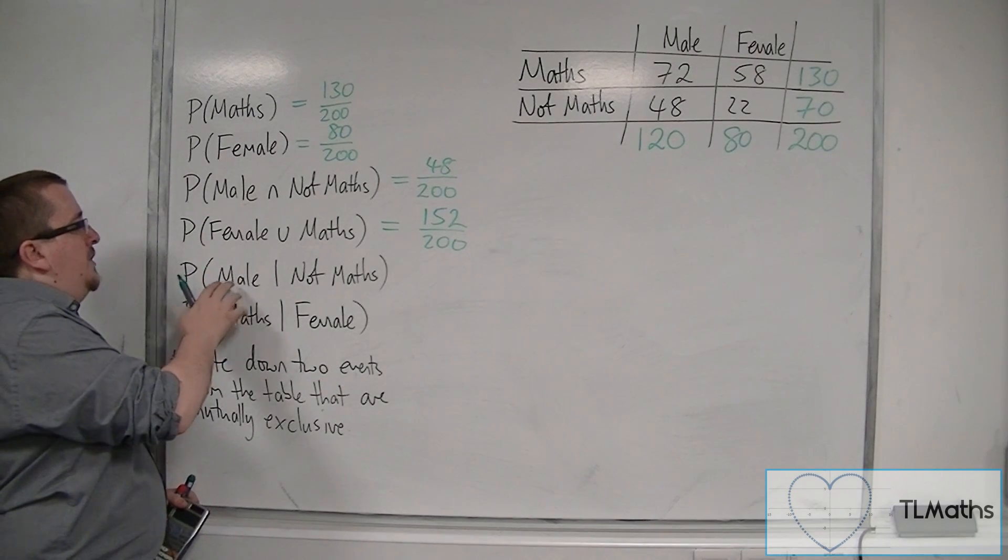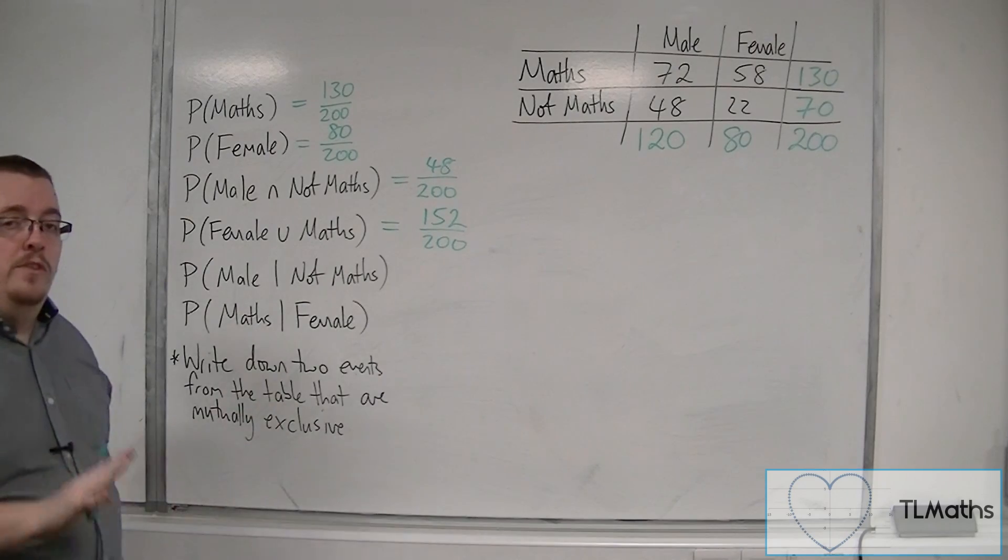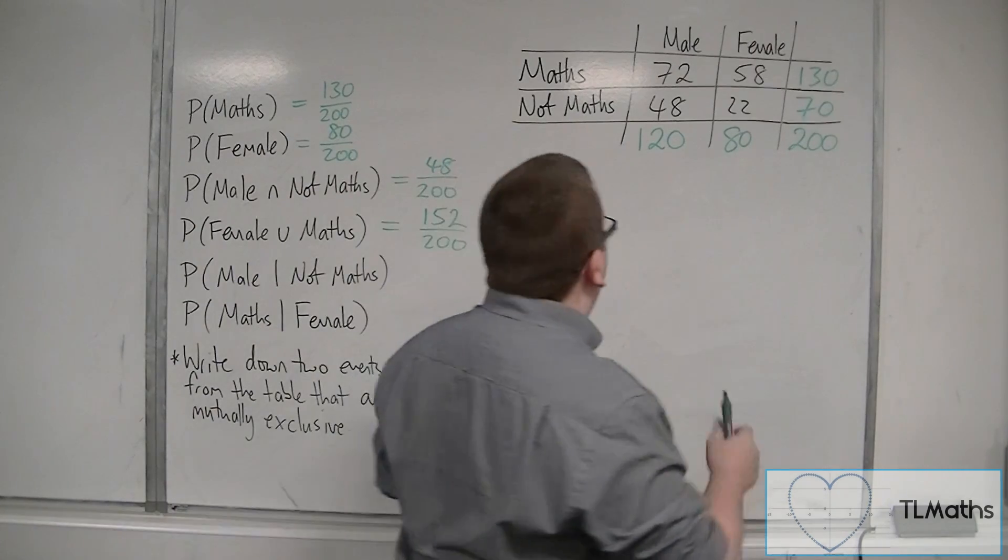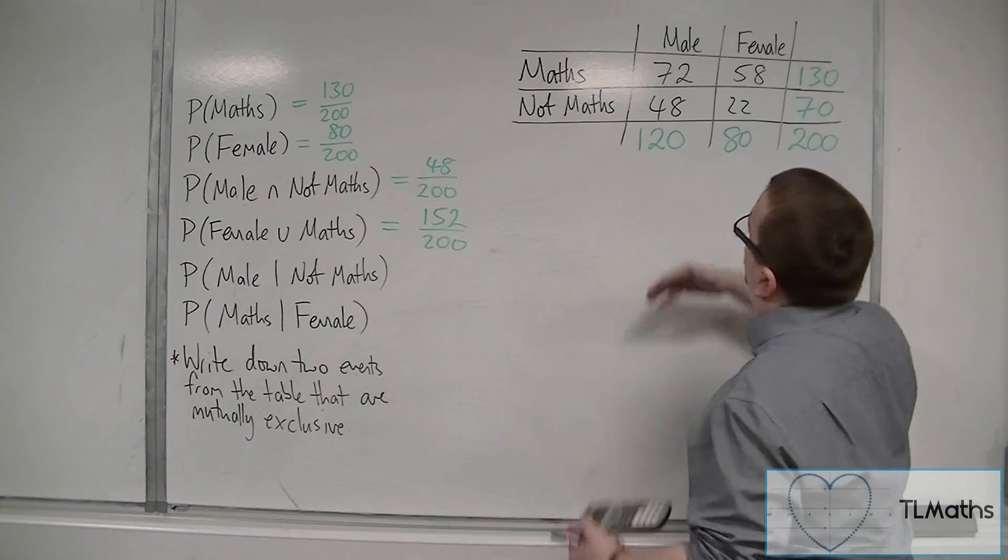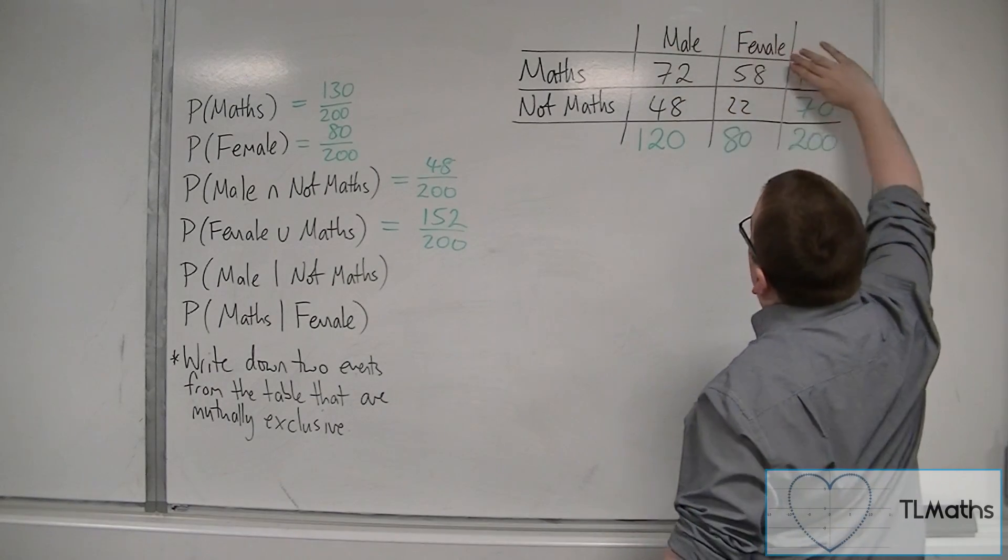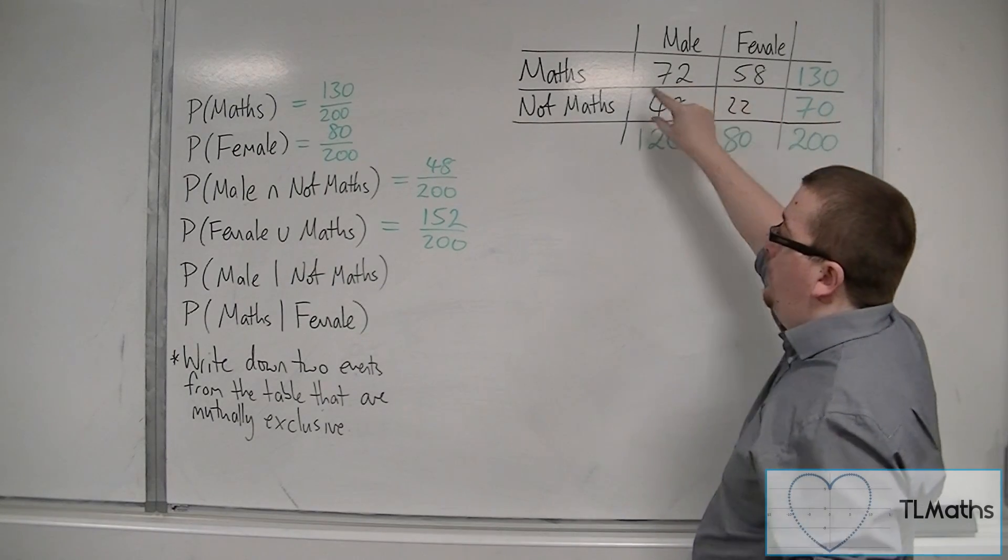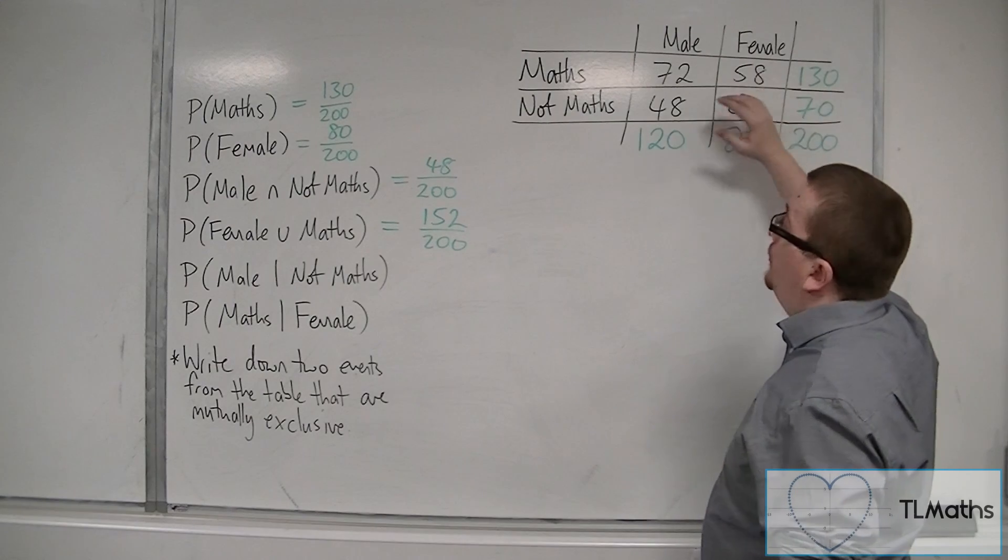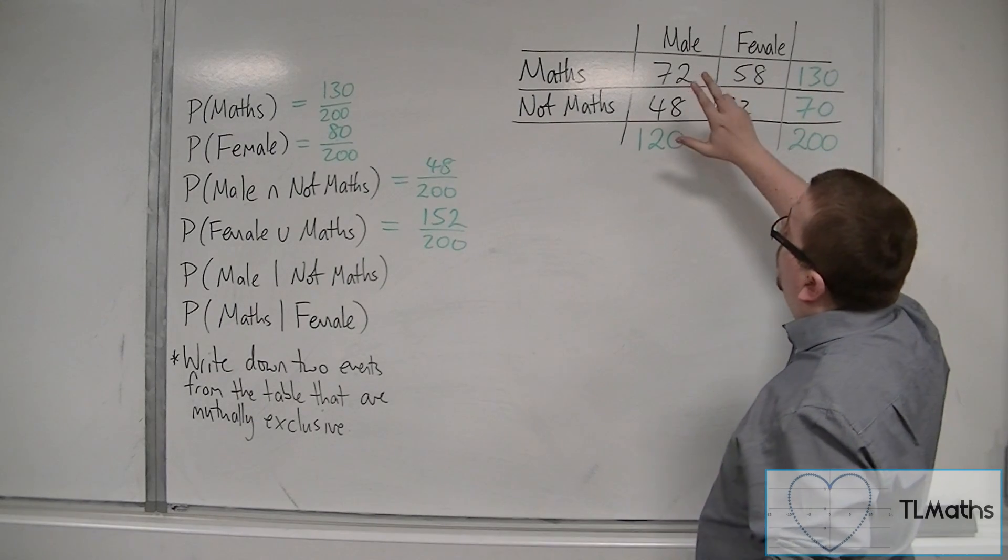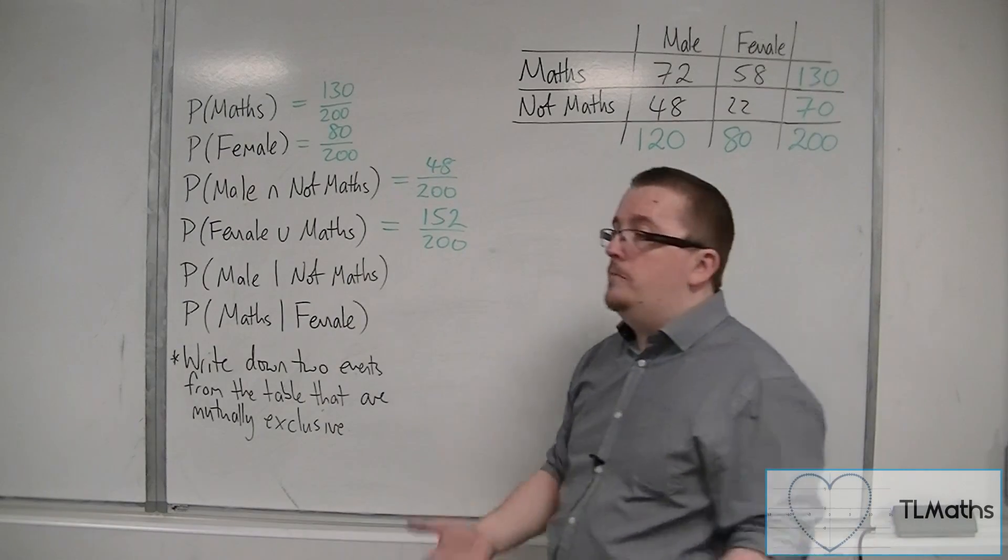If we're looking at the probability of selecting a student that is male, given that we know that they don't do maths, then all I need to do is to cover up those students that do maths and just look at this row. So not doing maths. So given that we know that they don't do maths, what's the probability of selecting a student that's male? Well, it's 48 out of the 70 students who don't do maths.